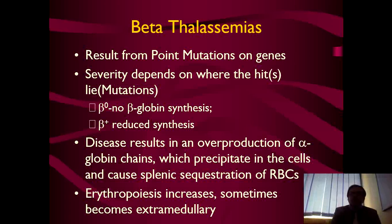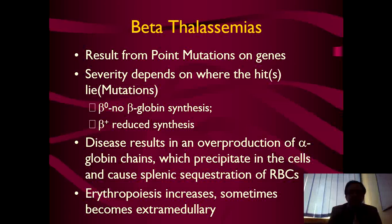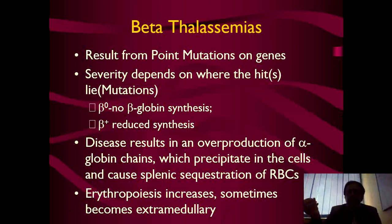Beta thalassemia results from point mutations — unlike alpha thalassemia which involves gene deletions. Severity depends on where the mutation occurs. Beta-naught means no beta-globin synthesis; beta-plus means reduced synthesis. The disease results in overproduction of alpha-globin chains which precipitate in cells, and there is splenic sequestration of RBCs leading to hemolysis. Erythropoiesis increases and sometimes becomes extramedullary.